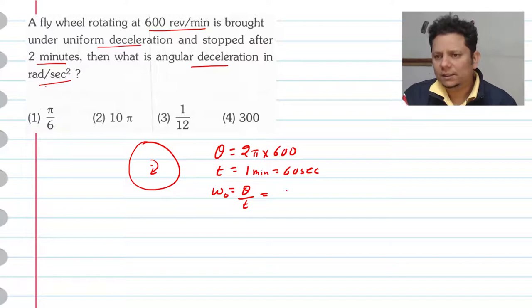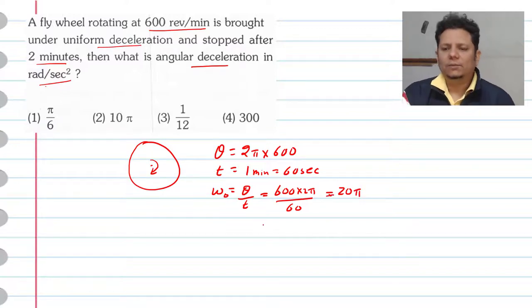So this value is 600 multiplied by 2π divided by 60. Zero cancel and 6 cancel, so this value of omega naught is 20π. So initial omega naught is this.